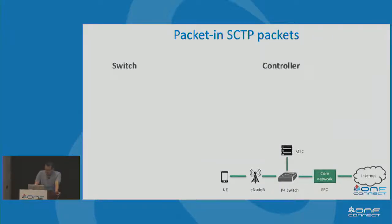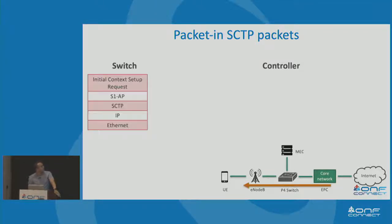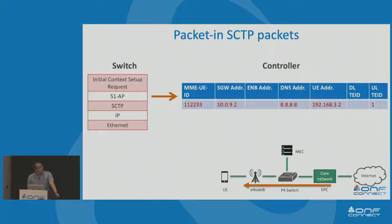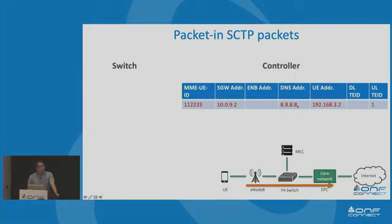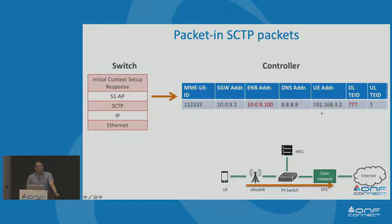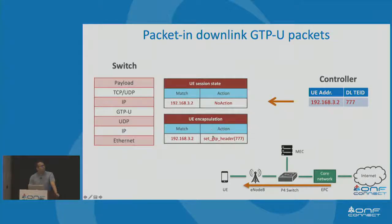However, the previous method has a fatal problem: if there is no downlink packet from the EPC, we will never know the mapping relationship between the UE IP and the downlink TEID. So we should use the SCTP packet to do the mapping. When the P4 switch receives an initial context setup request, it sends it to the controller. The controller gets all UE information, and for the response, it gets the eNB address and downlink TEID. The controller then writes to the same table to establish the mapping between UE IP and downlink TEID.